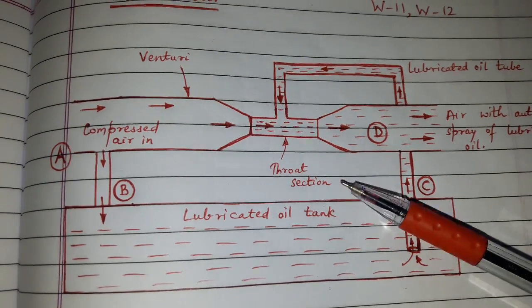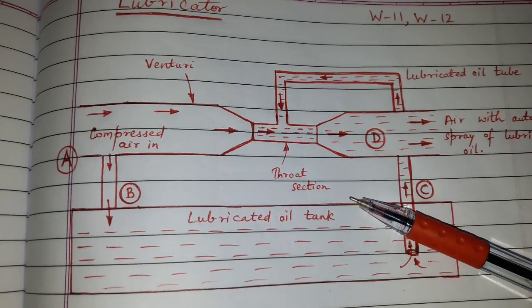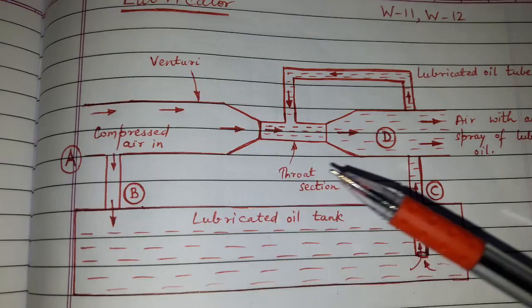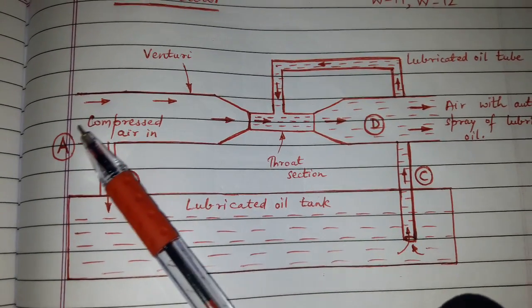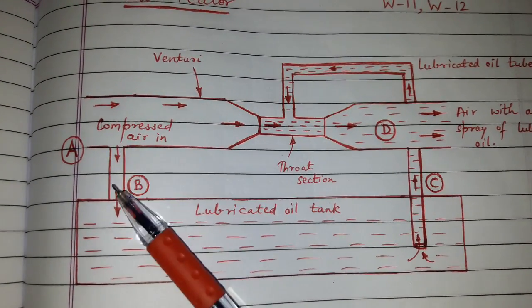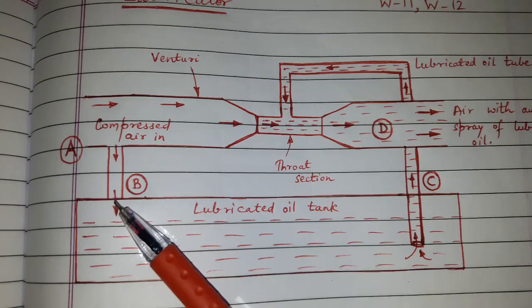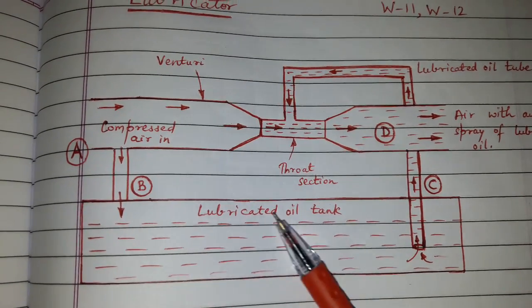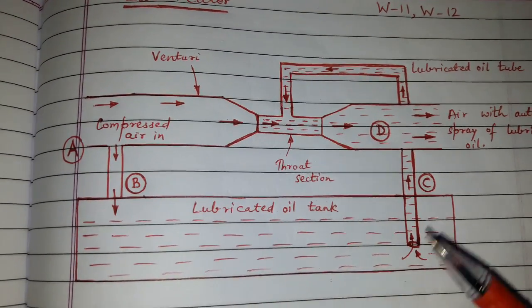This arrangement shows the working principle of lubricator. When the compressed air enters through port A, part of it goes through tube B and exerts pressure on the surface of the oil.